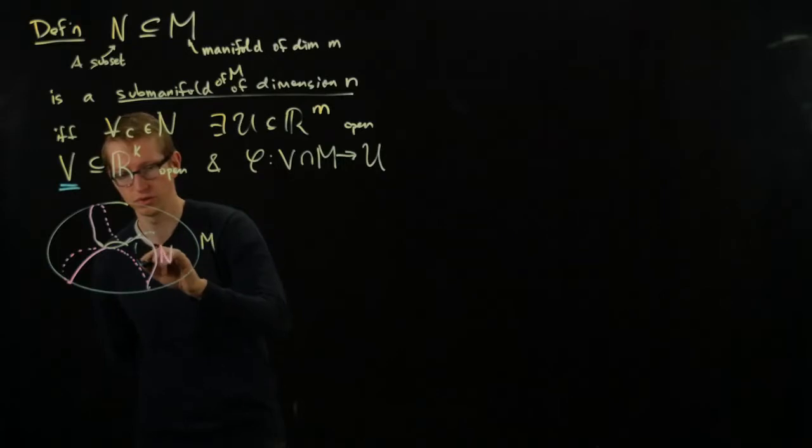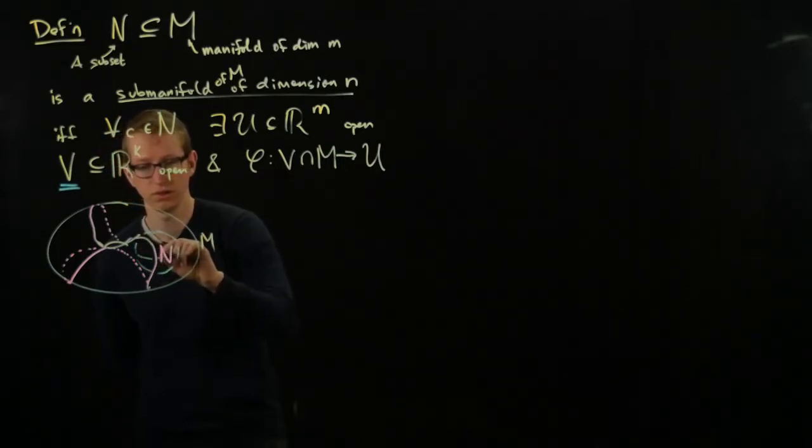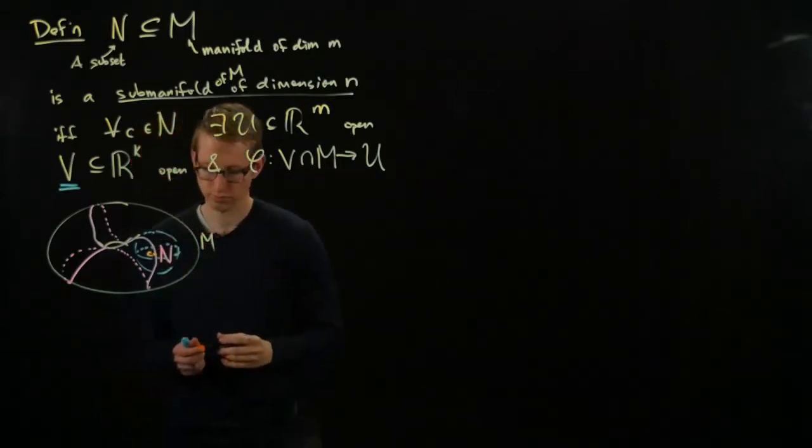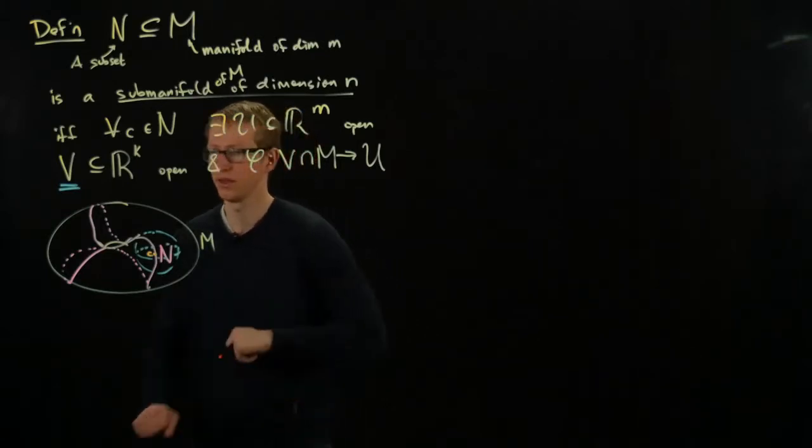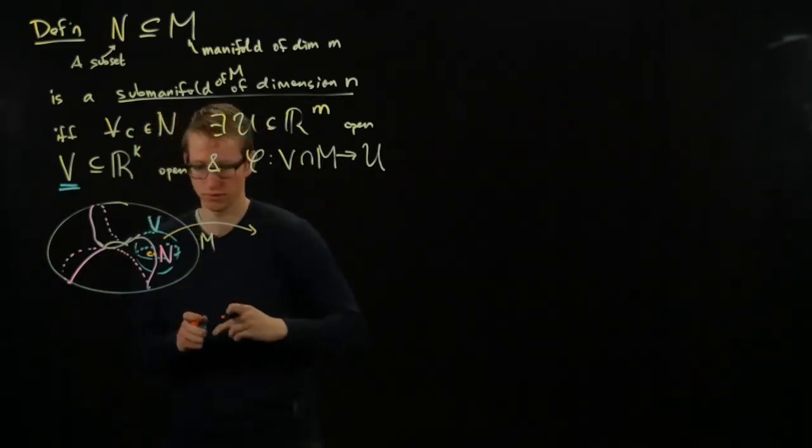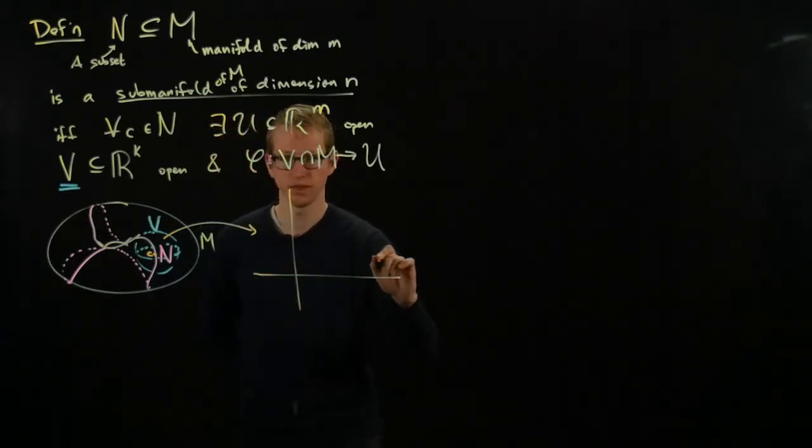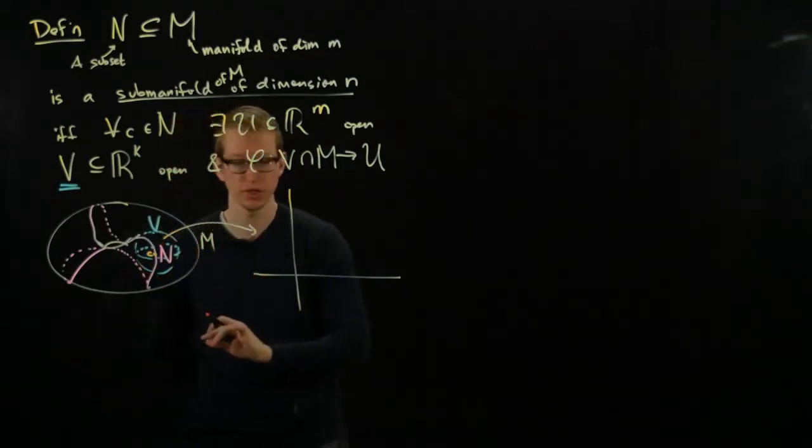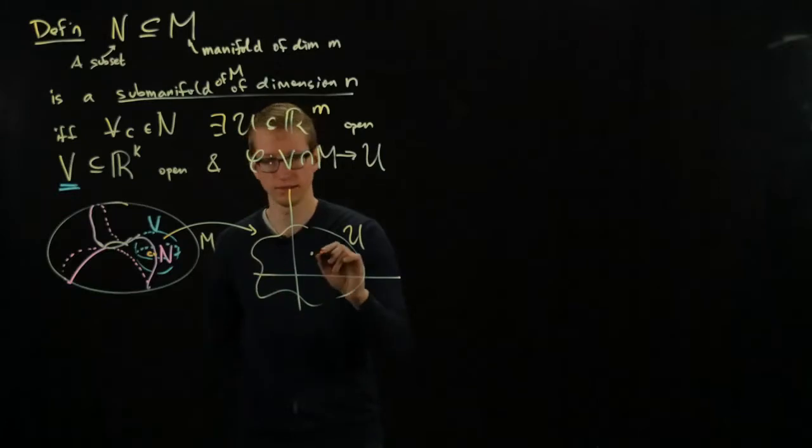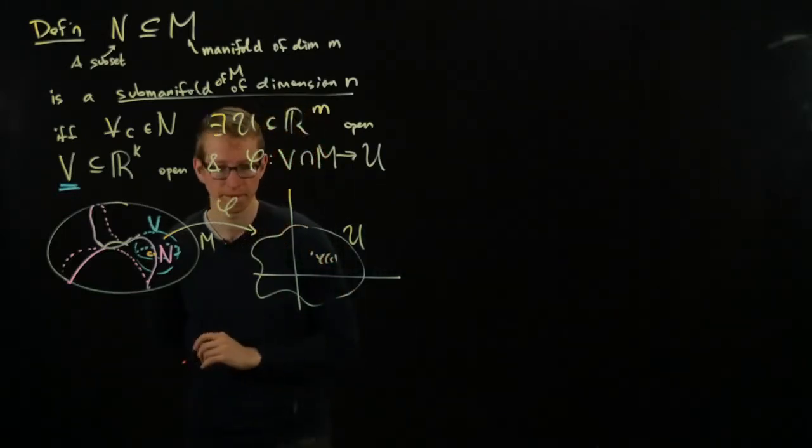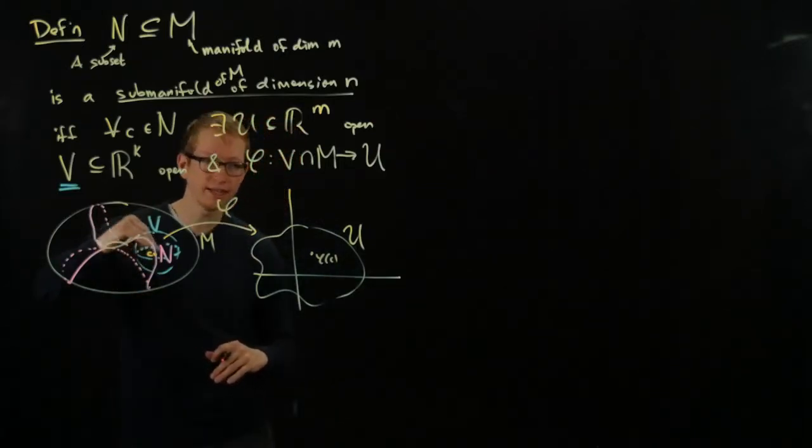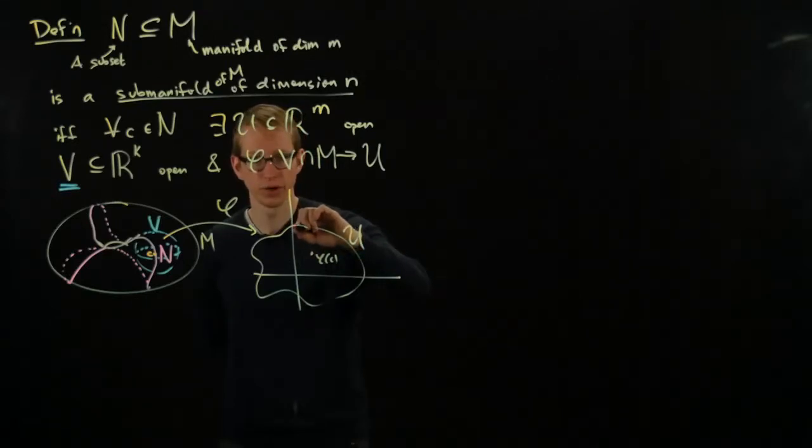So it's an open set. It's going to be hard to draw this, but this is supposed to be a three-dimensional ball in this picture. That intersects M and N, near the point C. And what we have is a diffeomorphism from the restriction of that open set V to another open subset of Euclidean space. This time this is going to be two-dimensional because our manifold M here in this picture is two-dimensional.